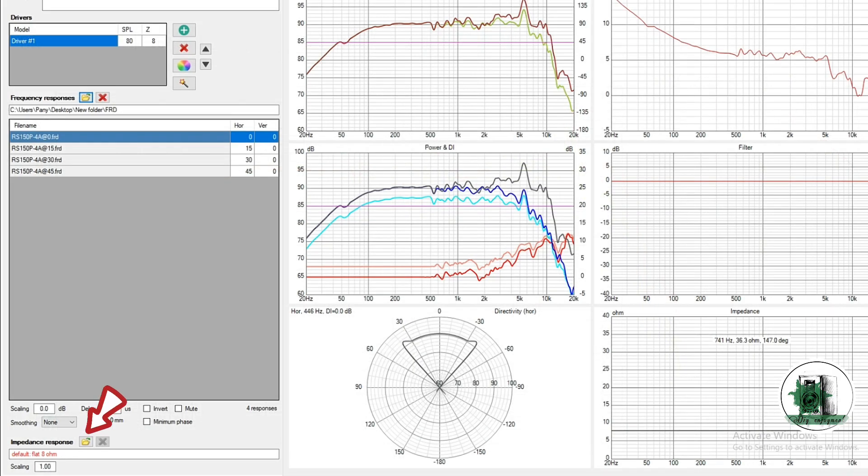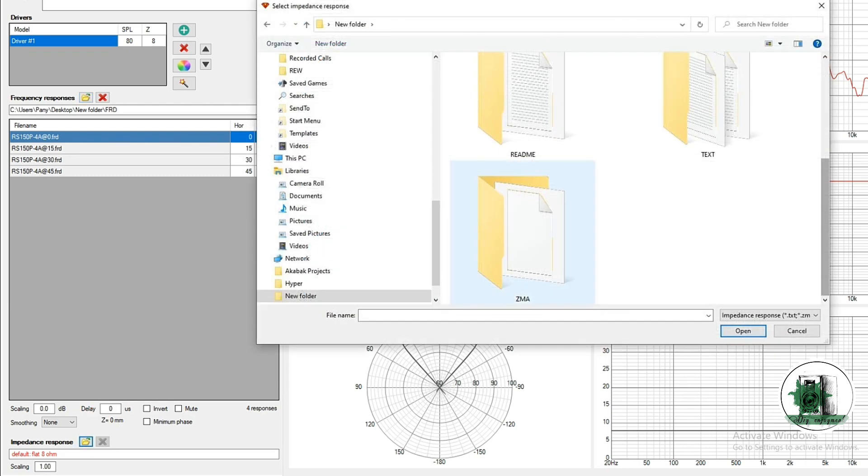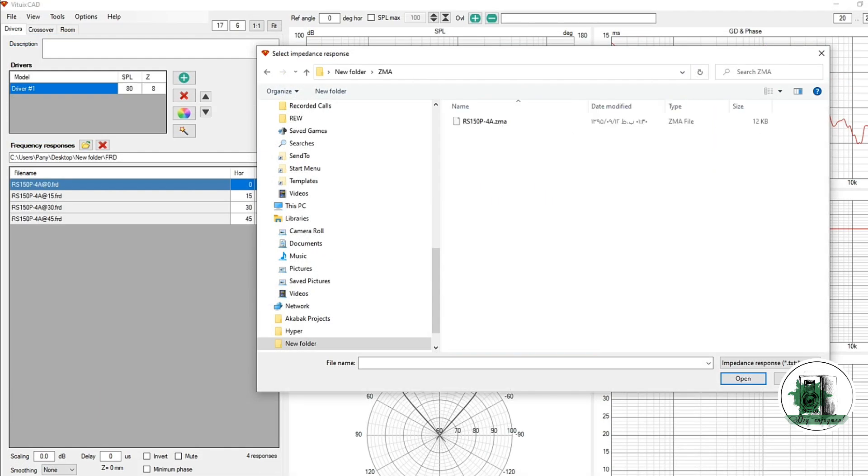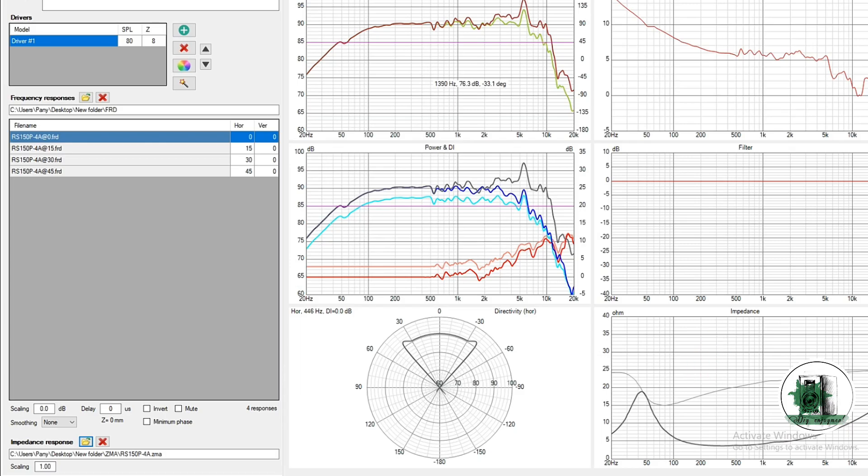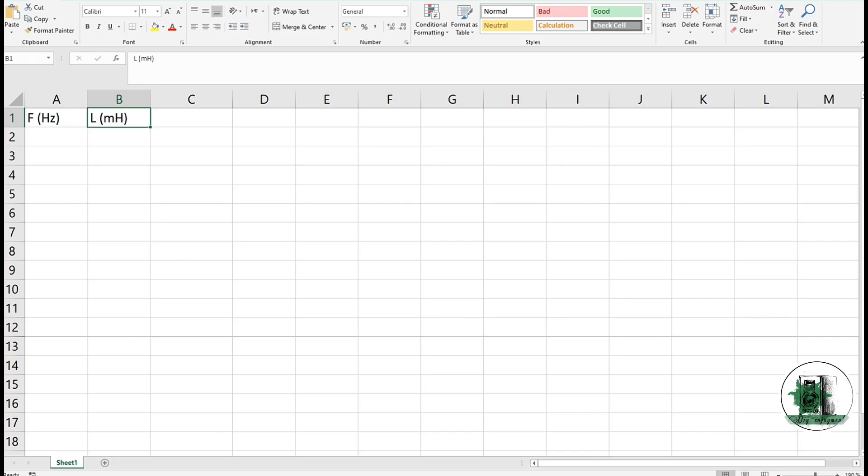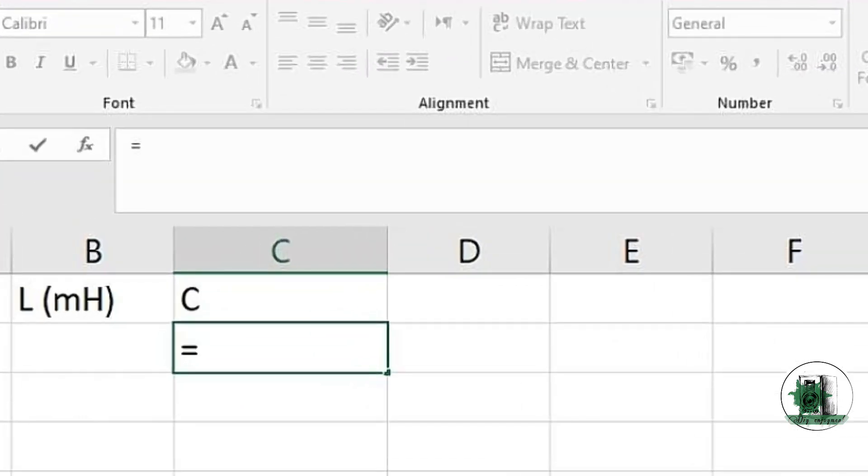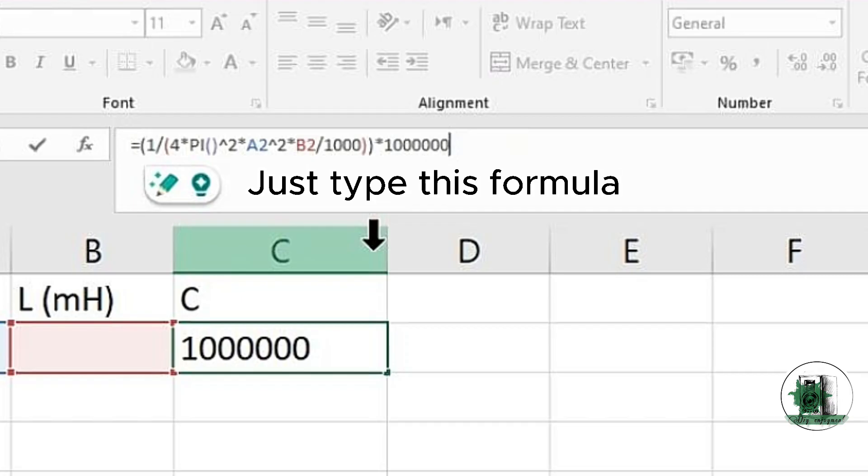Open ZMA from the downloaded folder. This is the impedance response of the driver. Now create an Excel file and enter all the data. After creating this file, you don't have to calculate C every time.